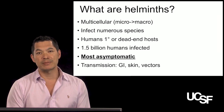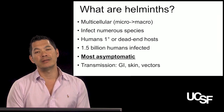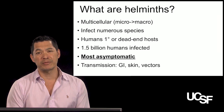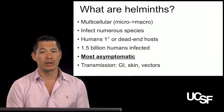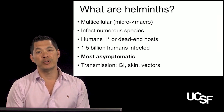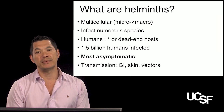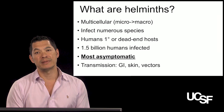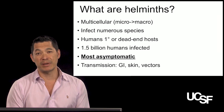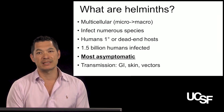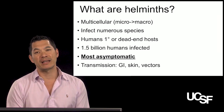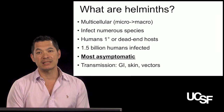How are helminths transmitted? They are transmitted primarily in an oral-fecal manner, where you ingest contaminated food or water. But they can also be transmitted through the skin — open skin, being barefoot, swimming in Lake Victoria, for example — or through vectors, particularly mosquitoes in filariasis.